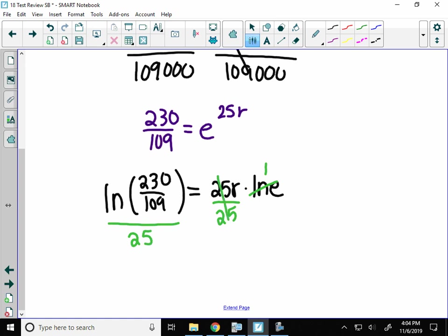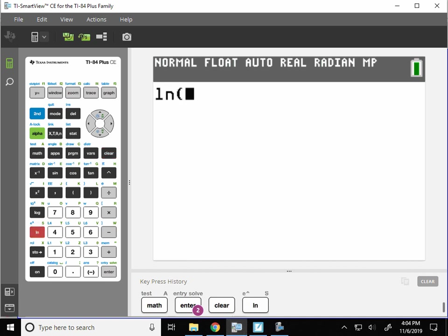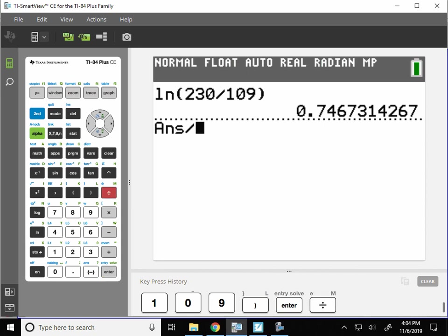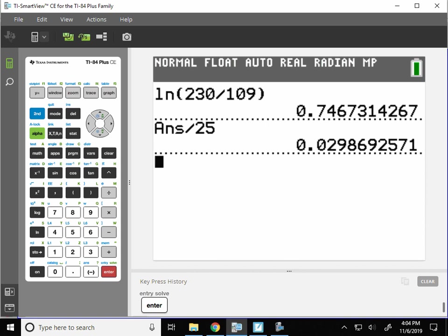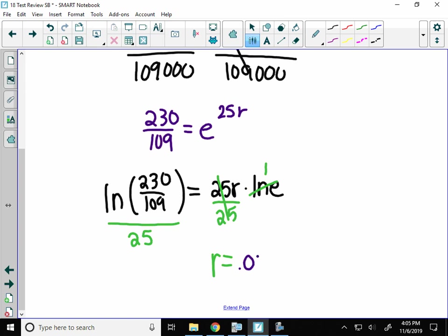So what I have here is, I'm ready for my calculator. So I have the natural log of 230, sorry. Can I write it as 320? No, 230. Okay, I'm not losing my mind. Divide it by 109. I hit enter, and then divide that by 25. That is my R, 0.02987. So R is 0.02987. And I want to know what is that percentage rate. So move the decimal over twice, and that means population is growing at 2.987%. There you go. That's really not bad.